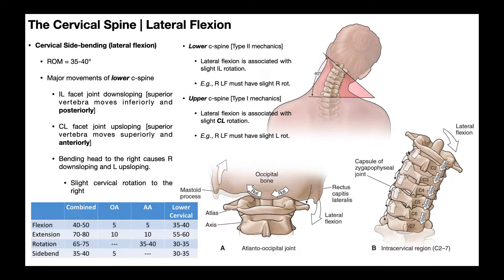On the contralateral side — in this case the left — we get up-sloping. There's more space, so those facet joints become farther apart. Up-sloping means the superior vertebra moves superiorly and anteriorly relative to the vertebra below; C3 glides superiorly and anteriorly relative to C4. The facet joints become more open-packed, and the intervertebral foramina gap open, creating more space for the nerve root. So if a person has left-side radiculopathy, they may actually like right lateral flexion because it opens the left side.